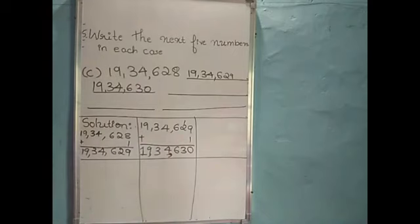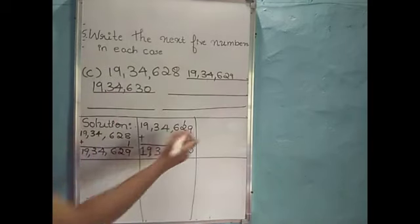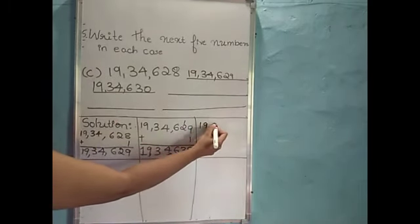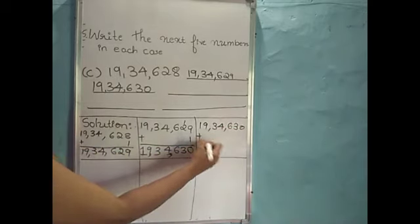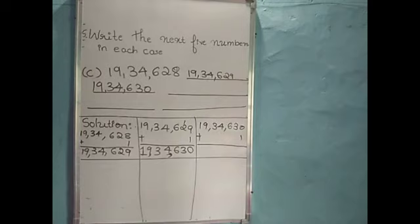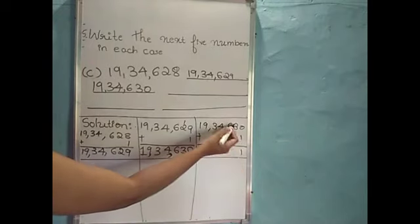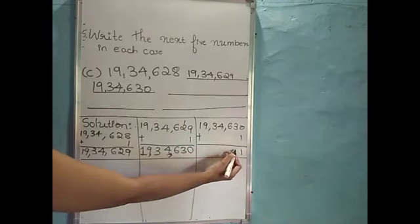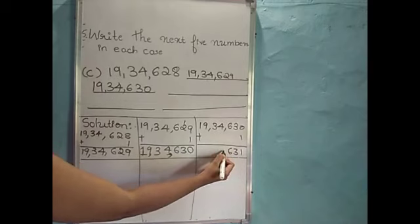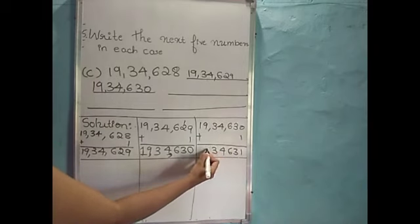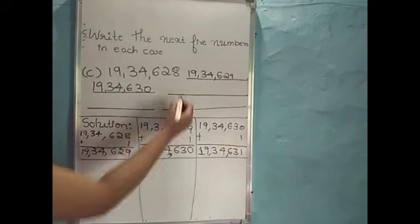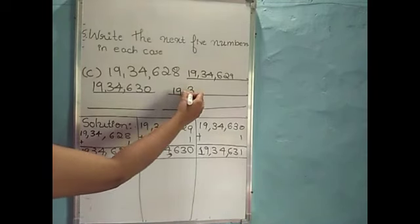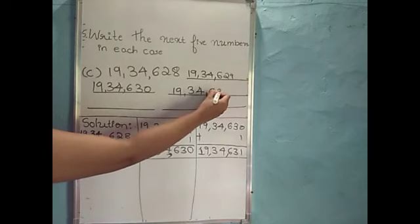We should add 1 to this number. So I will write here 19,34,630 plus 1: 0 plus 1 is 1. Write remaining numbers as it is: 3, 6, 4, 3, 9 and 1. So the next number is 19,34,631.